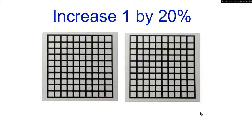Now, to increase 1 by 20%, you will shade 1 entire 10 by 10 grid to represent 1 and 20 squares in the second grid to represent 20%.